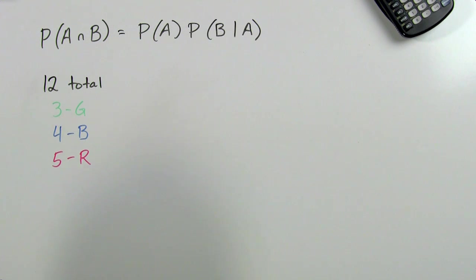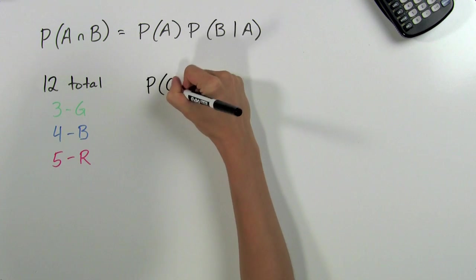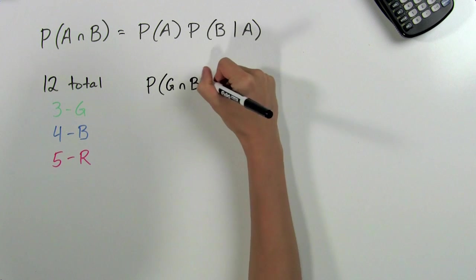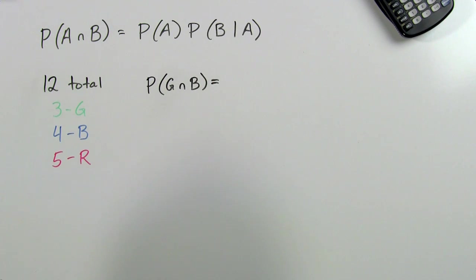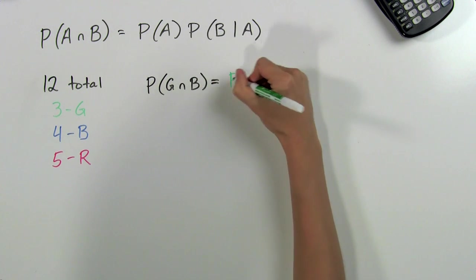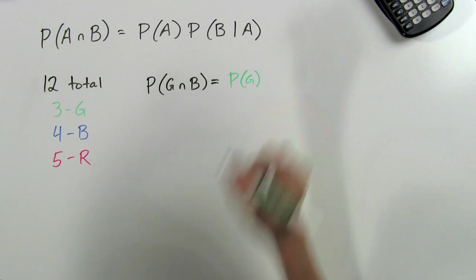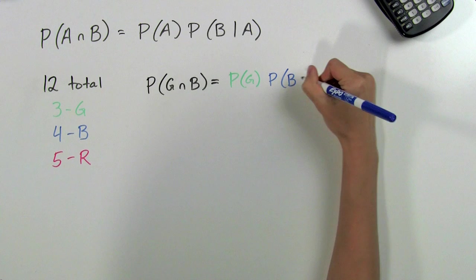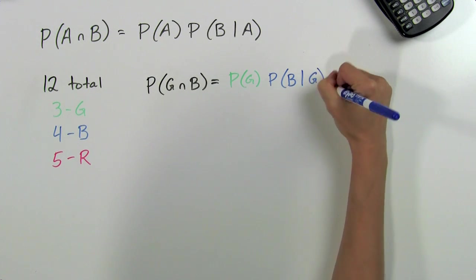Our equation will look like this. The probability of pulling out a green and blue marble is equal to the probability of pulling out a green marble times the probability of pulling out a blue marble after we've already pulled out the green.